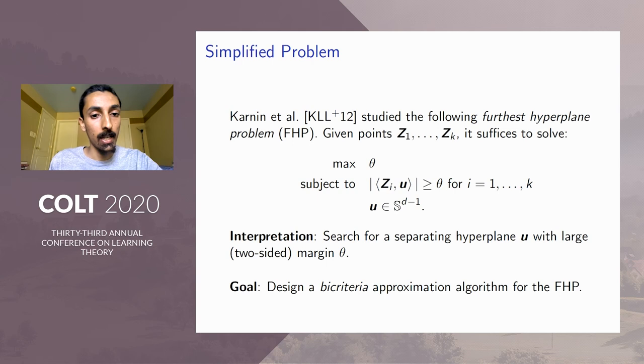and we want to search for a separating hyperplane u, which is a unit vector, which has large margin θ for all of the points z_1 to z_k. So that's represented here by this optimization problem. So we show that it suffices to design a bi-criteria approximation algorithm for the simpler problem.